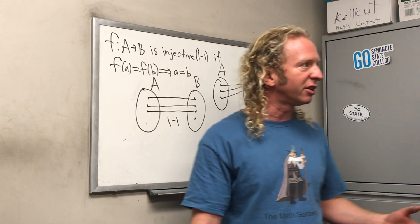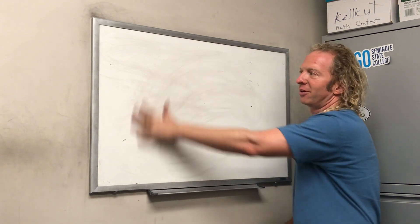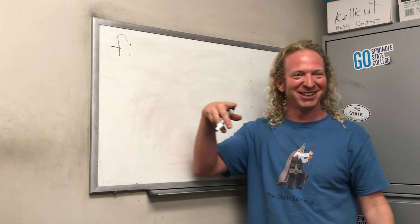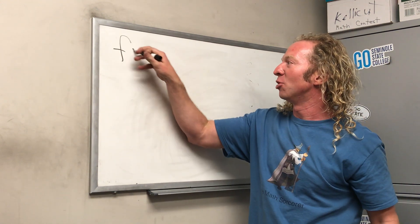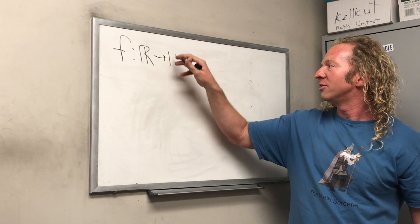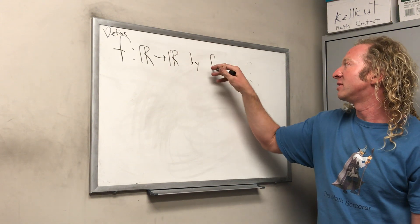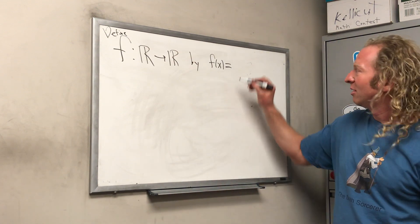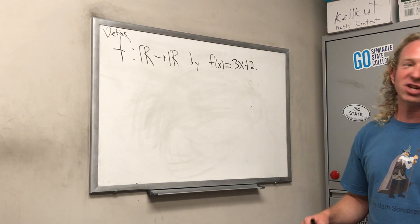Let's prove a function is one-to-one. We have a function from ℝ to ℝ defined by f(x) = 3x + 2 — a straight line. We're going to prove it's injective or one-to-one. By the way, you know the horizontal line test from earlier math? A horizontal line crosses this once, so it's one-to-one by the horizontal line test. But let's do a formal proof. The definition says: whenever f(a) = f(b), we have to show a = b.